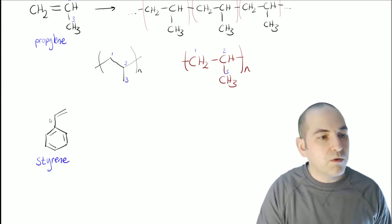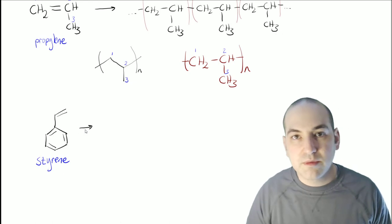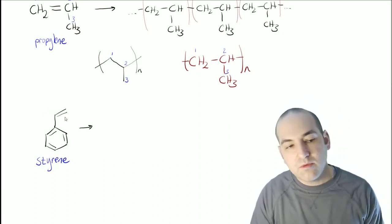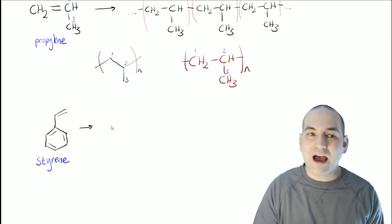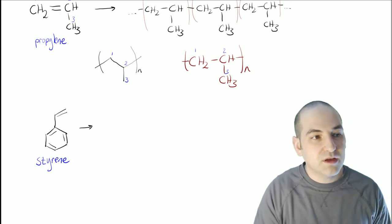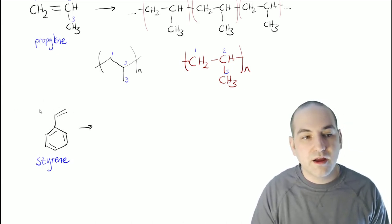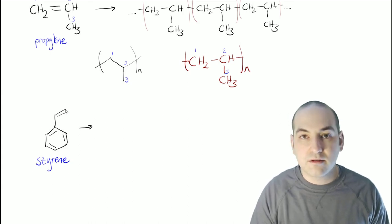And we want to know what would polystyrene look like. So if we polymerize styrene, what would that look like? So again, we have basically the same thing going on here, but it's not quite as obvious that it is the same thing. So first, we identify the double bond here that's going to be extending to make the polymer.